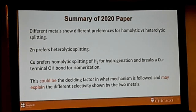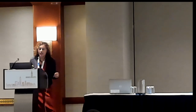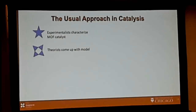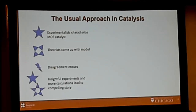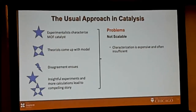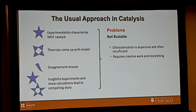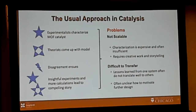What I've described is the usual approach in catalysis: experimentalists characterize a MOF catalyst, theorists come up with a model, there is disagreement, more experiments and calculations follow, and a compelling story emerges. However, there are problems with this approach. It's not scalable — characterization is expensive and insufficient. You cannot do it every time you change one metal. It requires great storytelling, and overall it is difficult to transfer — the lesson learned from one case may not translate well to others.